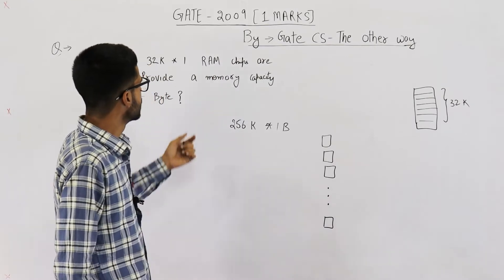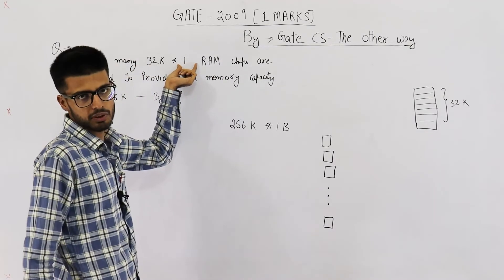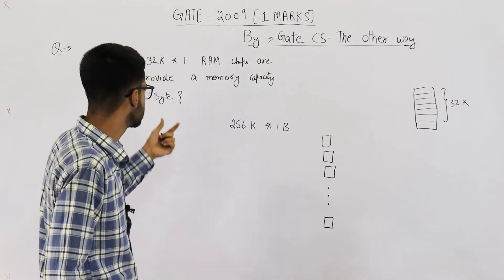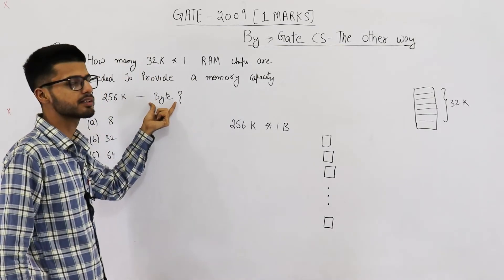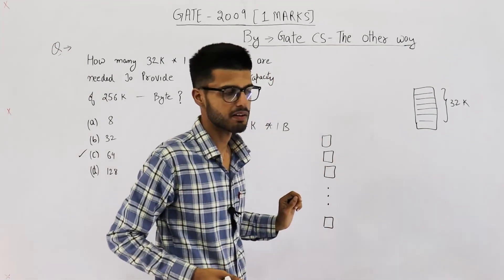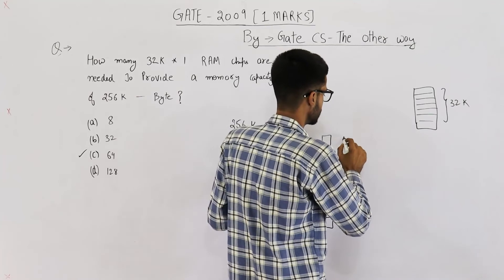Also the basic chip that we have is 1 bit wide. The chip that we want to construct is 8 bits wide. So to this side also will be having 8 chips only.